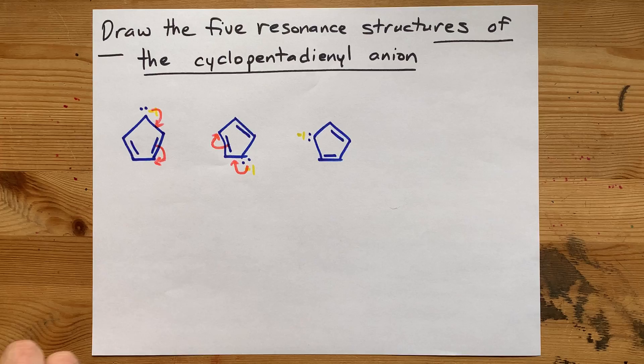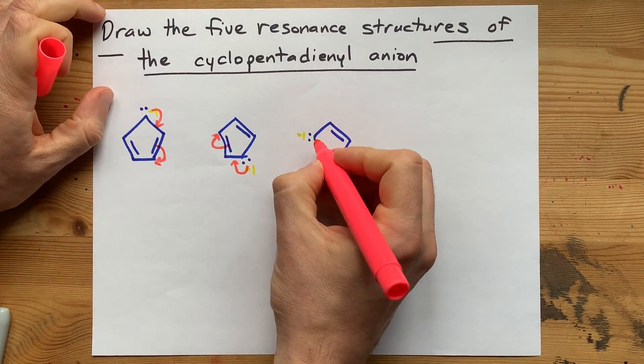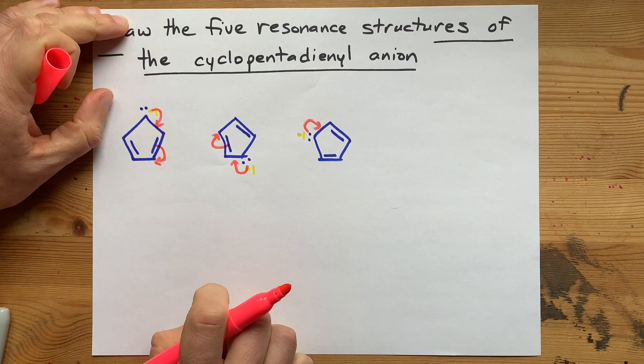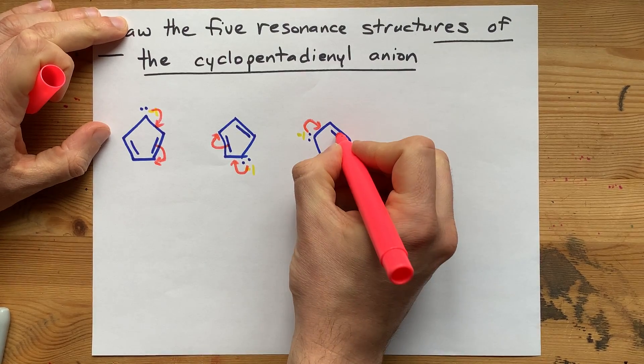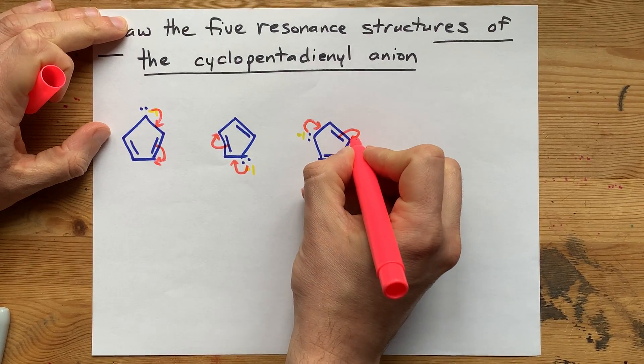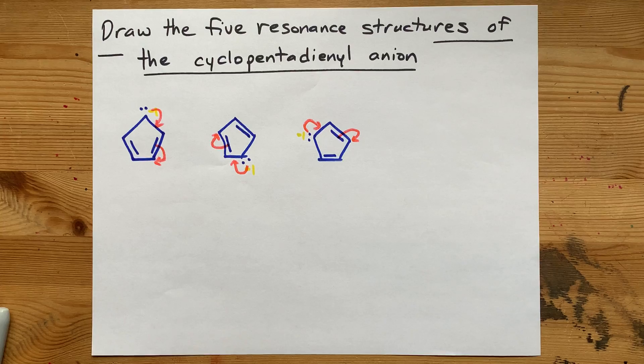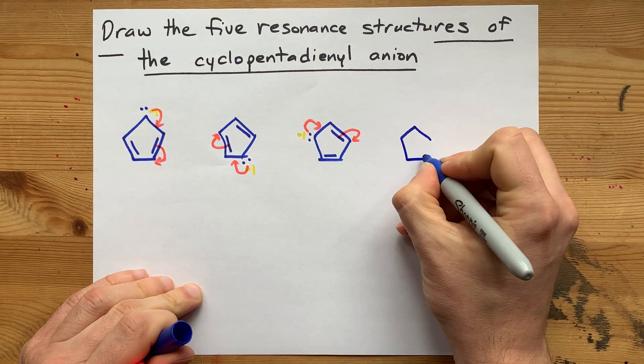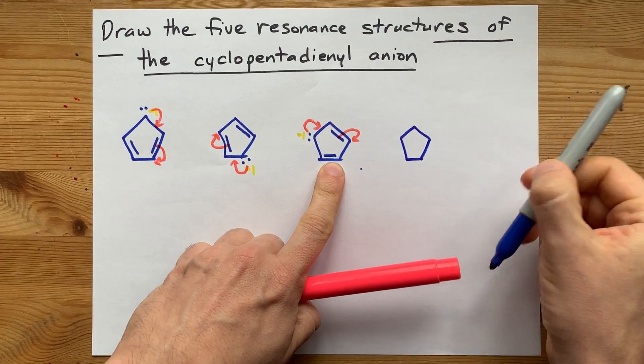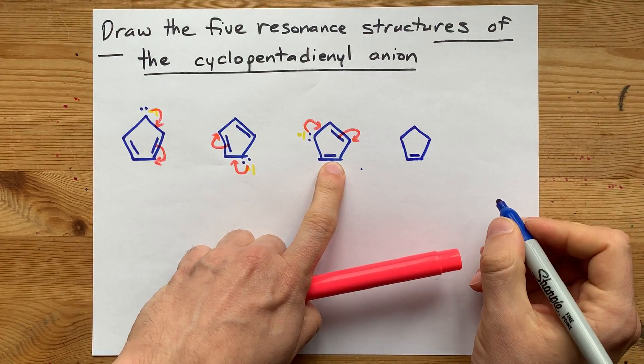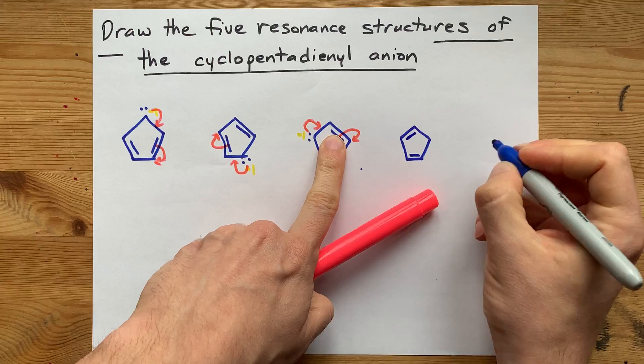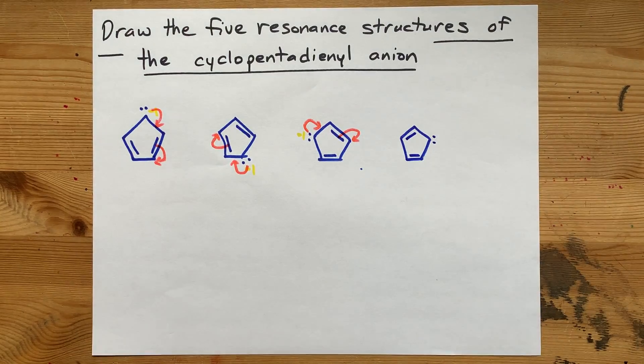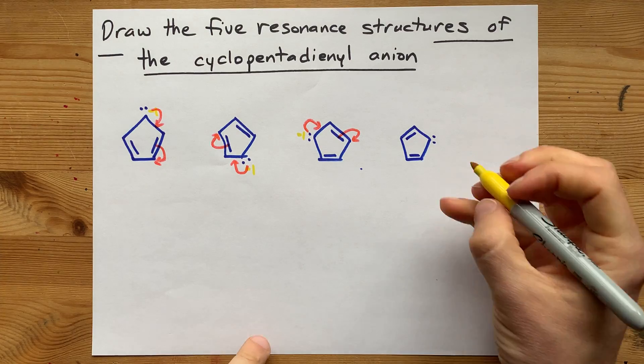Continue twice more. Push your way into this bond. Force the electrons from the current double bond onto the next carbon. That's a pentagon. Untouched double bond gets drawn. New double bond gets drawn. Lone pair gets put on a carbon. I'm going to put a formal charge here.